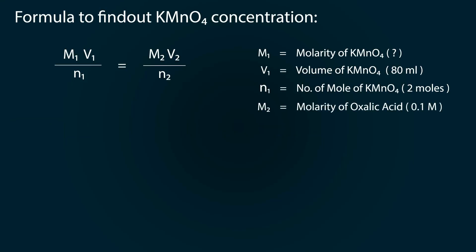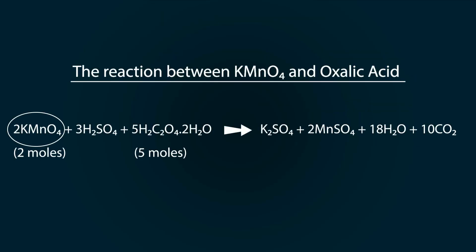Where M2 is equal to molarity of oxalic acid which is 0.1 molar. V2 is the volume of oxalic acid which is 20 milliliters. N2 is the number of moles of oxalic acid which is 5 moles. We found this from the reaction.